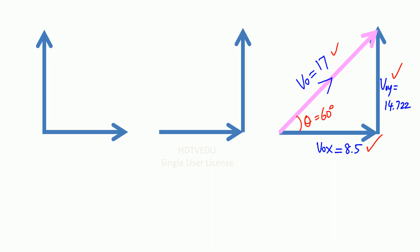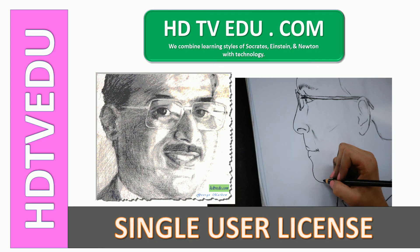So one single vector with an angle given with respect to the horizontal can be resolved into a horizontal component and a vertical component. For a vector, all you need is the horizontal component and the vertical component. This is George Matthew signing off — good luck.